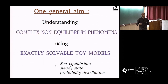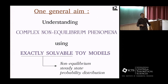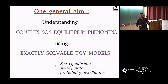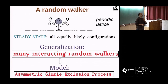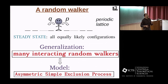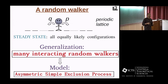One of the general aims in statistical mechanics is to understand such complex non-equilibrium phenomena using simple, exactly solvable toy models, and we are often interested in the long-time limit or steady-state behavior of the system. If you can find out the exact non-equilibrium steady-state probability distribution, then you can calculate observables of interest, explore the possibility of phase transitions, calculate transport properties, and so on. When talking about exactly solvable toy models, one of the simplest examples is that of a single random walker on a one-dimensional periodic lattice, which can hop to the right with rate p and to the left with rate q.